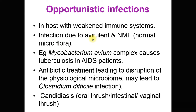In opportunistic infections, the pathogens are avirulent or belong to the normal microflora but can cause infection. For example, Mycobacterium avium complex causes tuberculosis in AIDS patients — it does not cause infection in a normal individual but can cause infection in AIDS. Another example is Clostridium difficile infection in persons on prolonged antibiotic treatment.